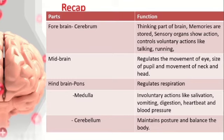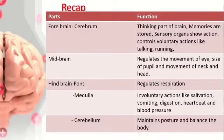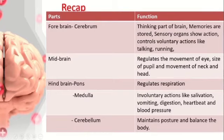Quick recap: the forebrain, comprising the cerebrum, helps you think, store memories, and relay sensory signals to motor nerves. The midbrain regulates eye movement, pupil size, and head and neck movement. The hindbrain has three parts — pons, which regulates respiration; medulla, which controls involuntary actions like salivation, vomiting, digestion, heartbeat, and blood pressure; and cerebellum, which maintains posture and balance.